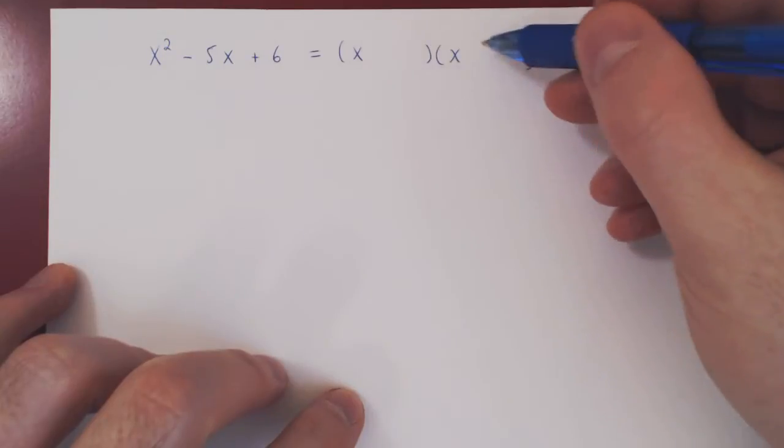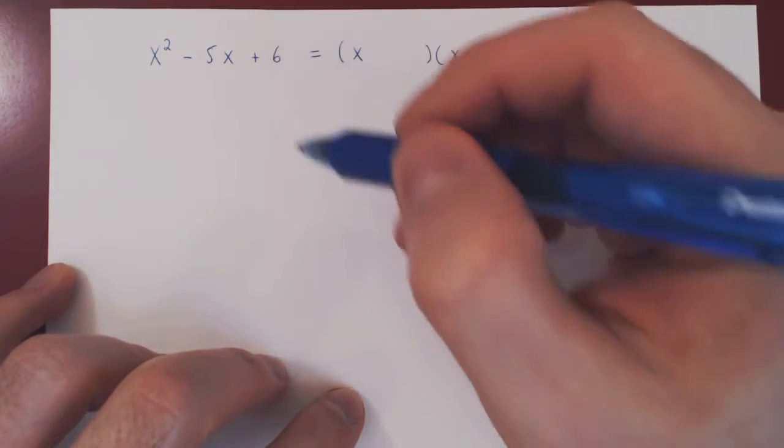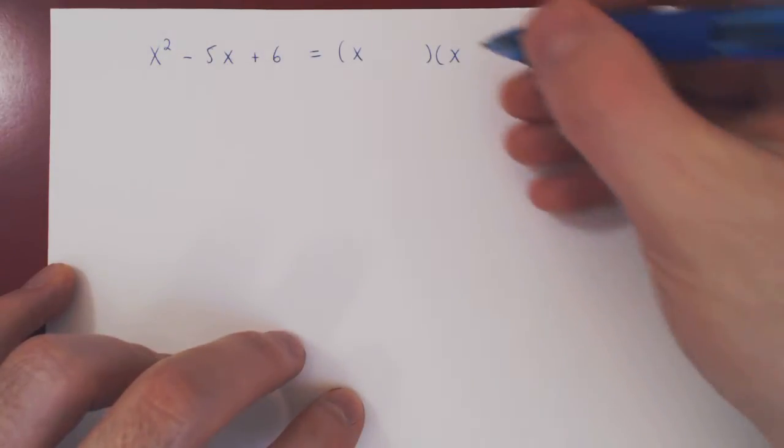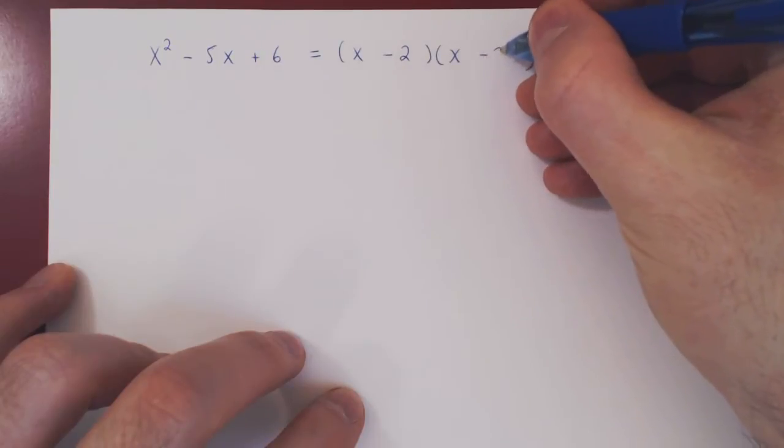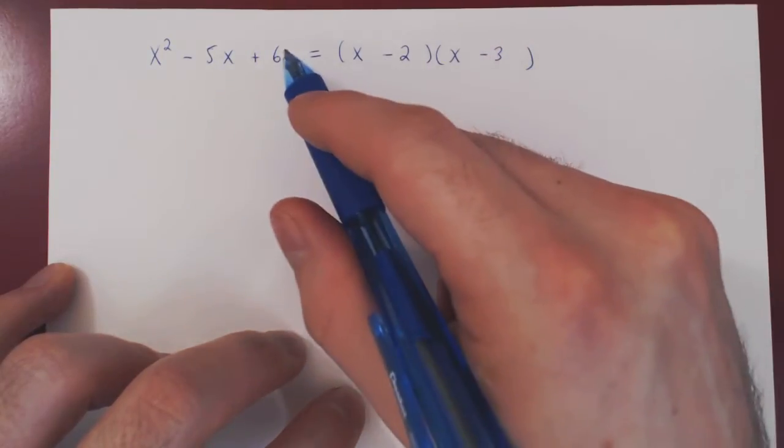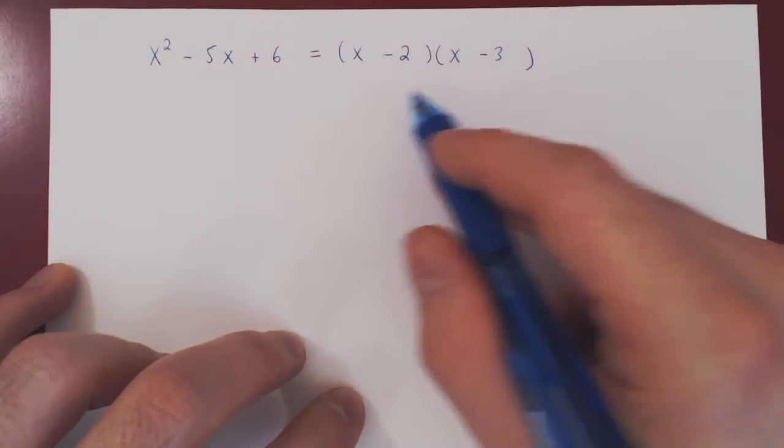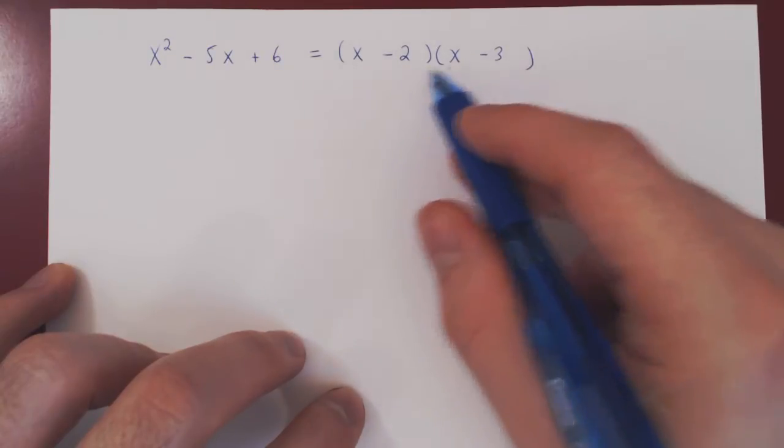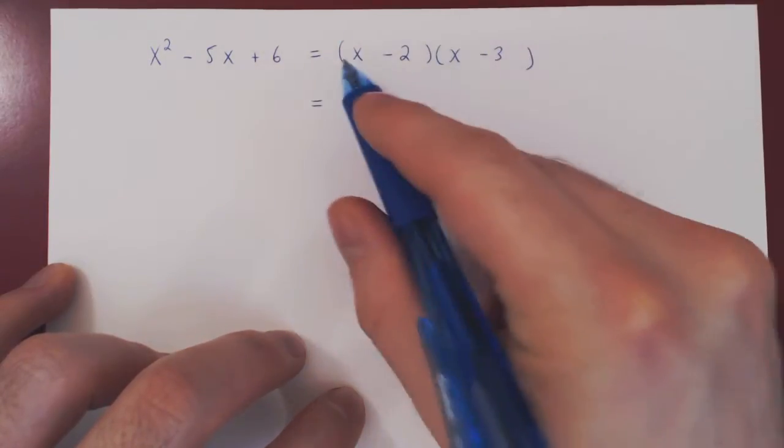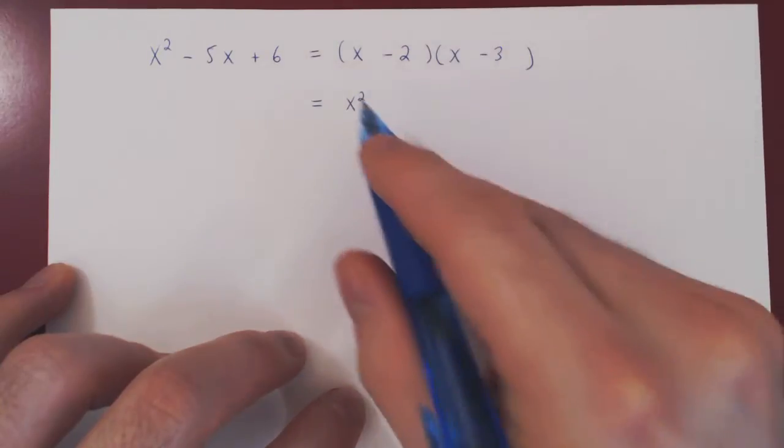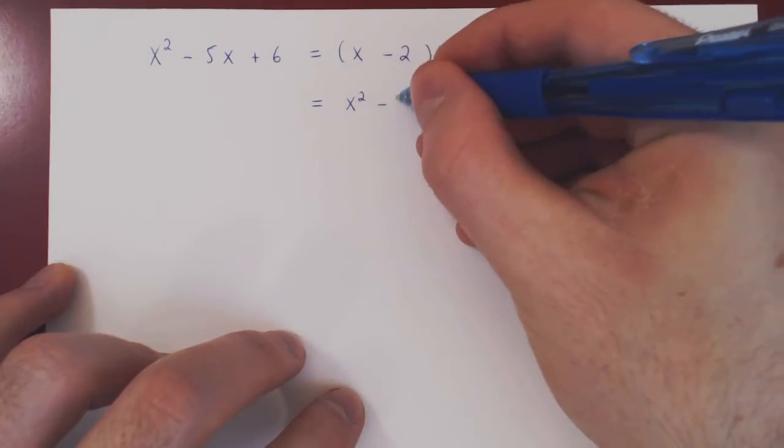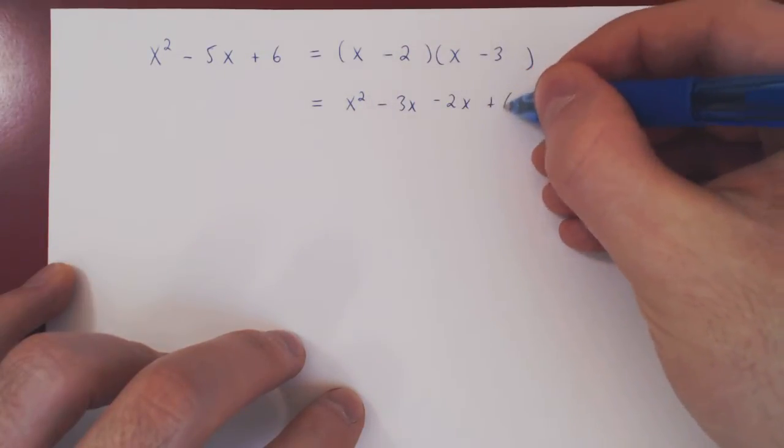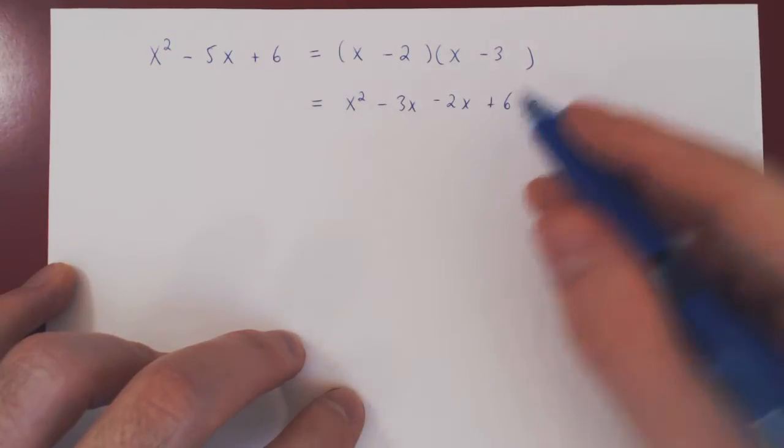So here we need two numbers whose product is positive 6 and whose sum is negative 5. Well, this is obviously negative 2 and negative 3. If you multiply both, you get positive 6, and if you add negative 2 with negative 3, you get negative 5. And you can verify your factorization by multiplying out. x times x is x², minus 3x, minus 2x, negative 2 times negative 3 is positive 6, which of course gives us x² - 5x + 6.